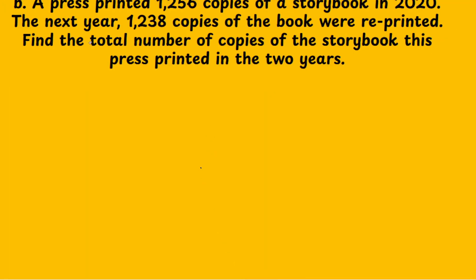Second sum: a press printed one thousand two hundred and fifty-six copies of a storybook in 2020. In 2021, one thousand two hundred and thirty-eight copies of the book were reprinted. Find the total number of copies the press printed in the two years.